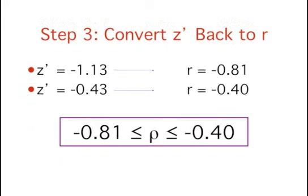The final step is to convert the endpoints of the confidence interval back to R using the same table or calculator we used in step 1. The R associated with the Z' of negative 1.13 is negative 0.81, while the R associated with the Z' of negative 0.43 is negative 0.40.